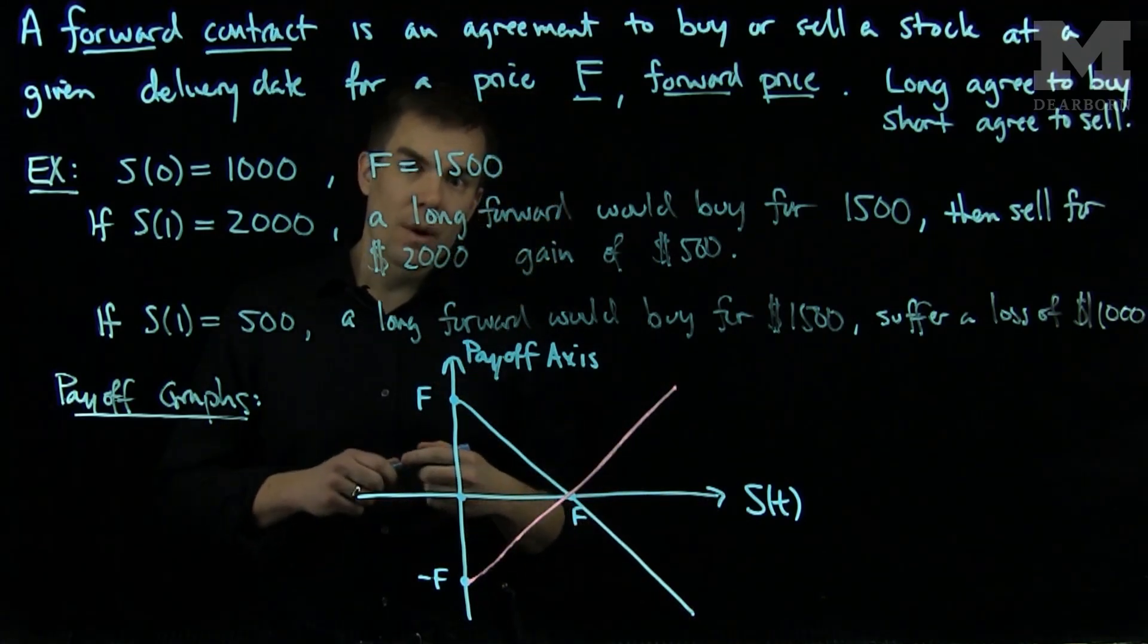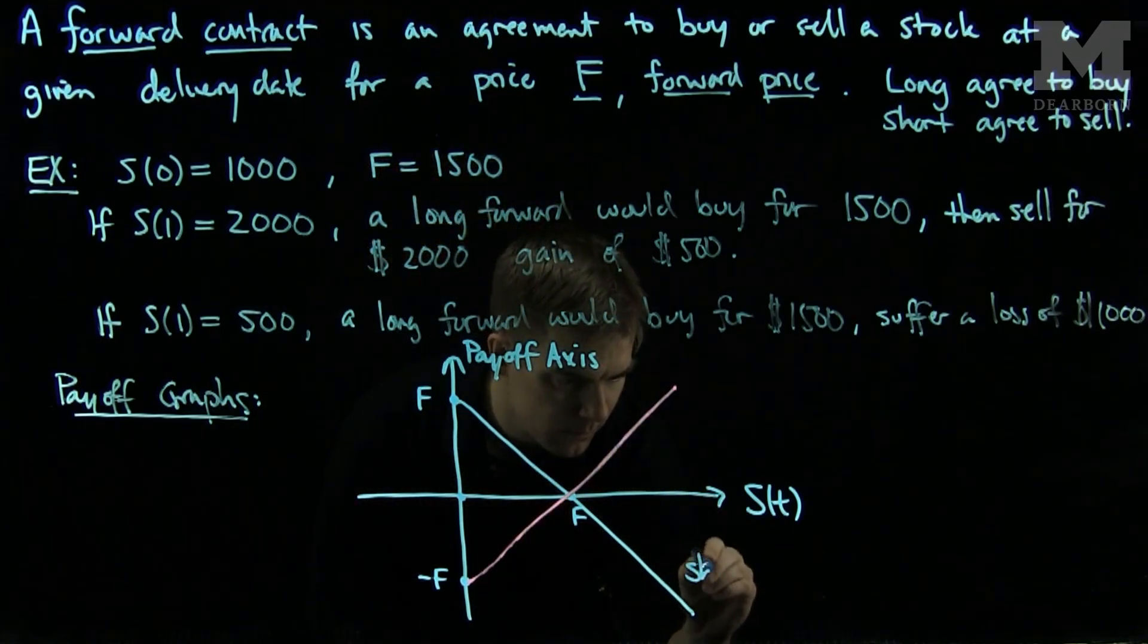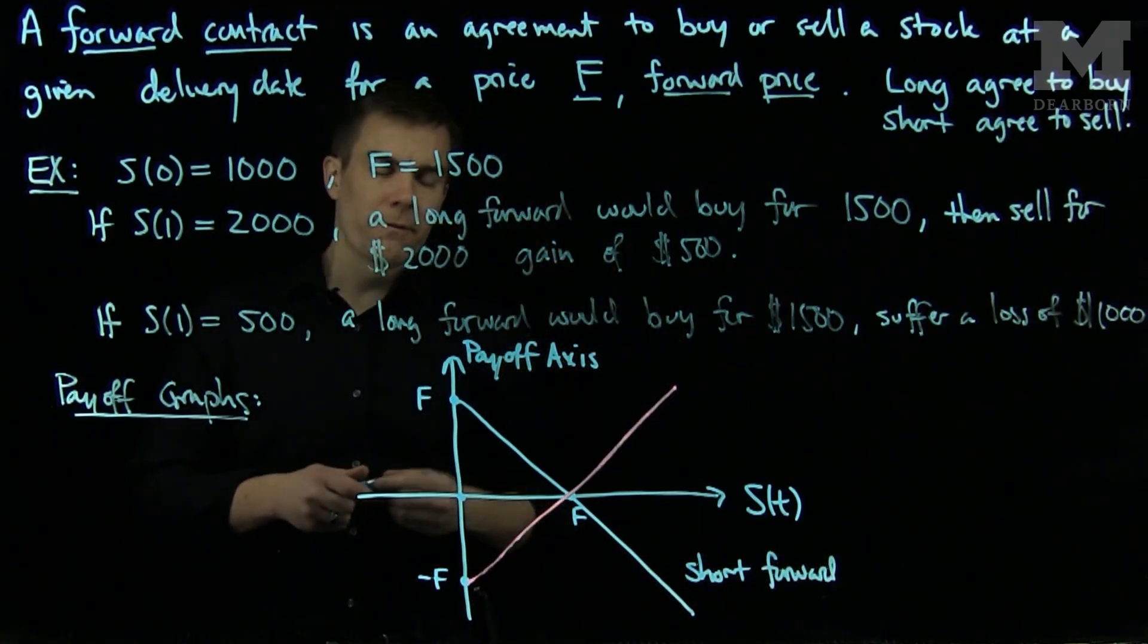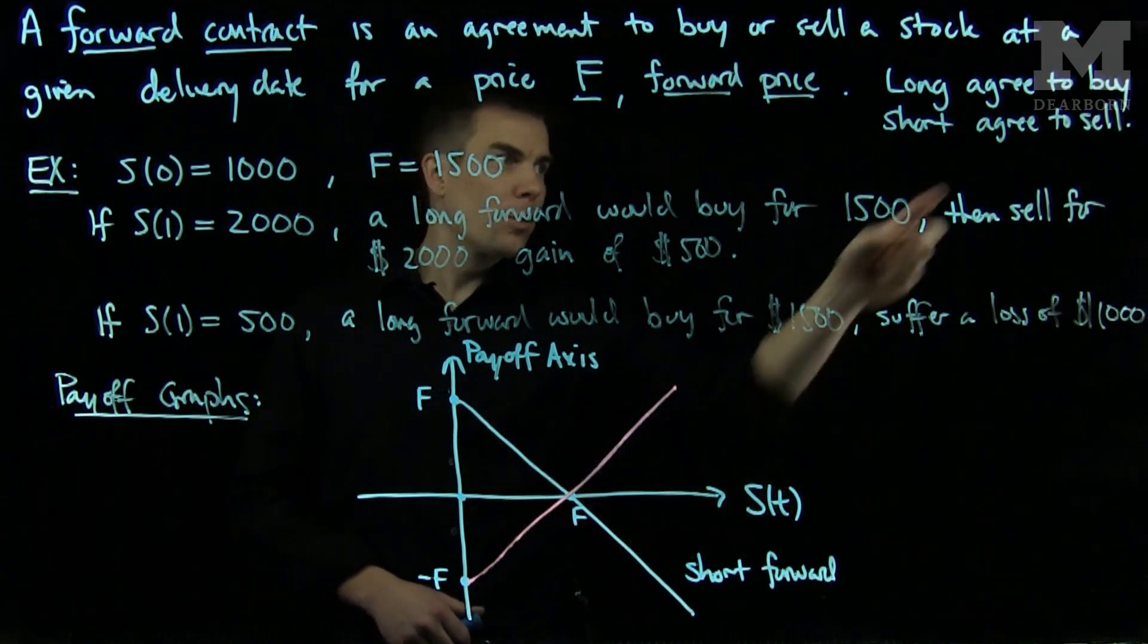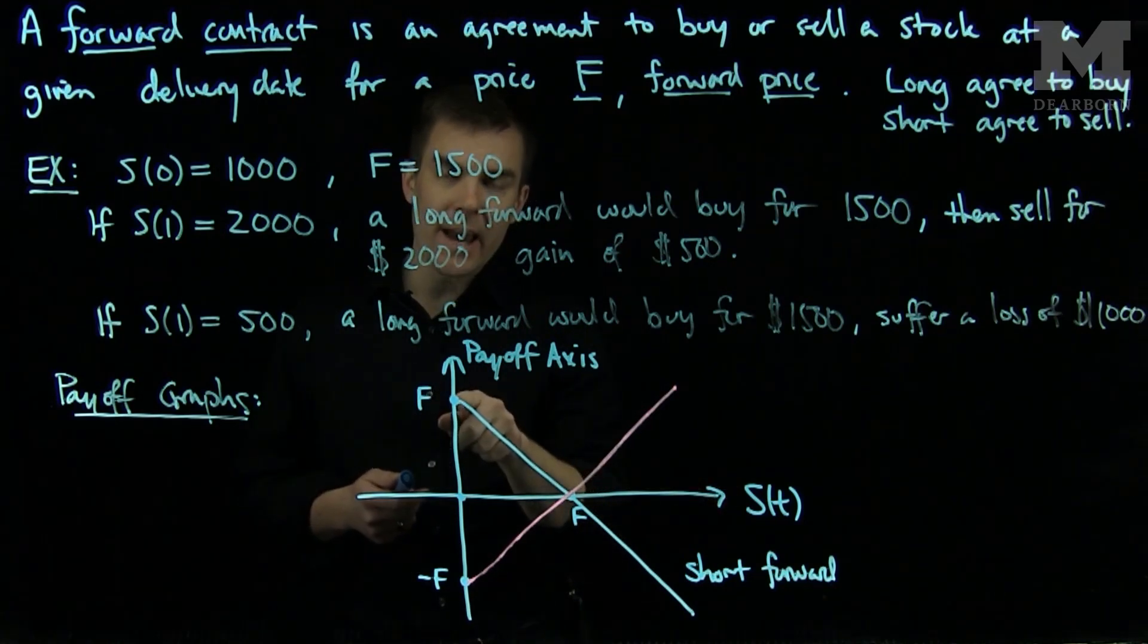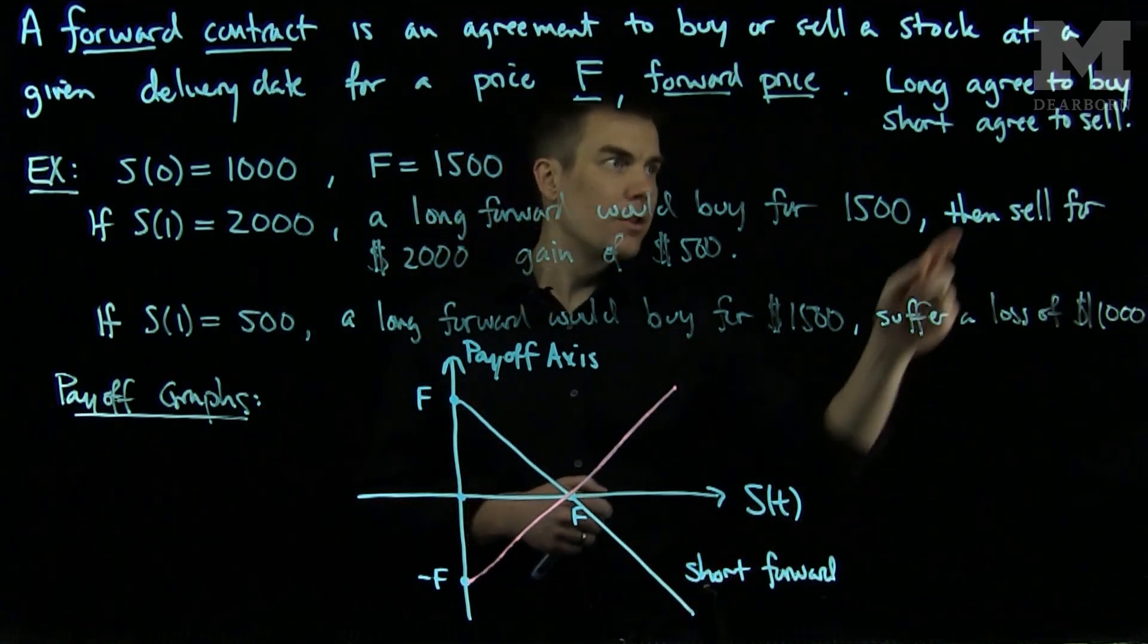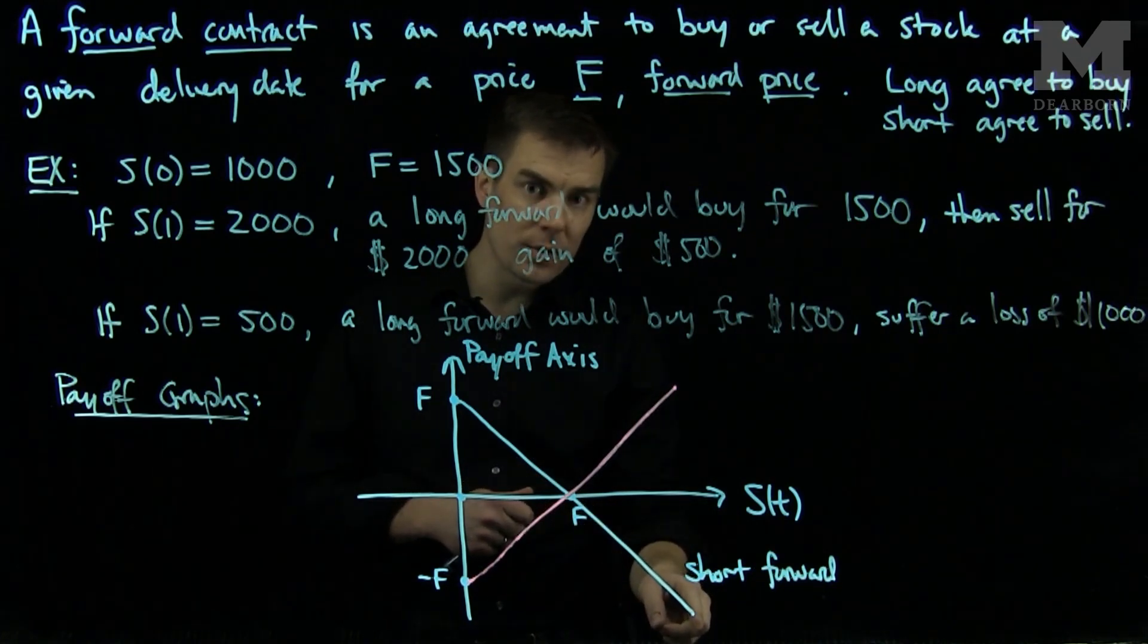Now, the downward sloping graph represents the payoff for a short forward. For a short forward, if the stock price is zero, the short forward will agree to sell for F even though the stock price is worth zero, so they would make a gain of F dollars. Whereas if the price got extremely large, the short would have to agree to sell for the price F even though the value is very large, meaning that they suffer an extreme loss.